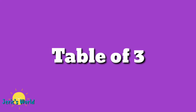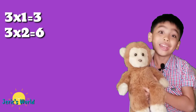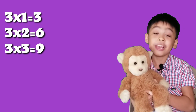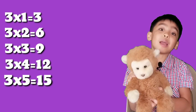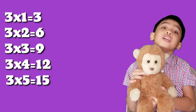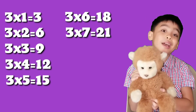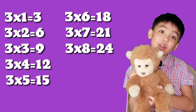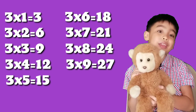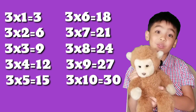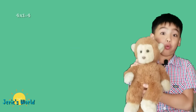Table of 3. 3 times 1 equals 3. 3 times 2 equals 6. 3 times 3 equals 9. 3 times 4 equals 12. 3 times 5 equals 15. 3 times 6 equals 18. 3 times 7 equals 21. 3 times 8 equals 24. 3 times 9 equals 27. 3 times 10 equals 30.